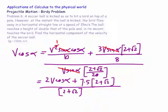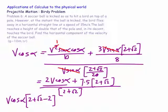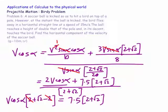v cos alpha times (2 plus root 2) minus 2 equals 7.5 lots of (2 plus root 2). The 2's cancel, and we just divide by root 2 to get an expression for v cos alpha.